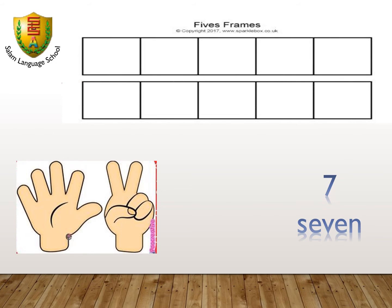Show me 7 on your hands. And also, show me 7 in a 5-frame. Let's draw 7 dots in a 5-frame. When we draw 7 in a 5-frame, we fill one of the 5-frames first, then put 2 dots in the next 5-frame.